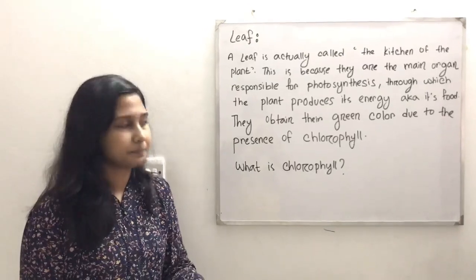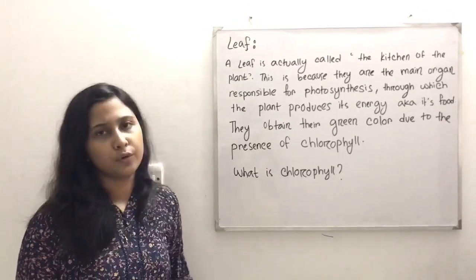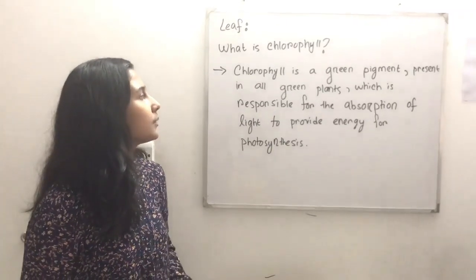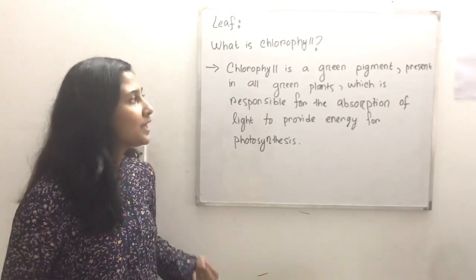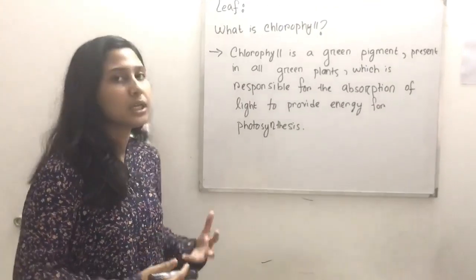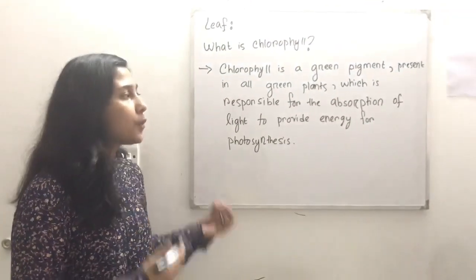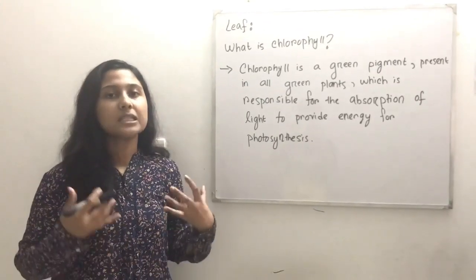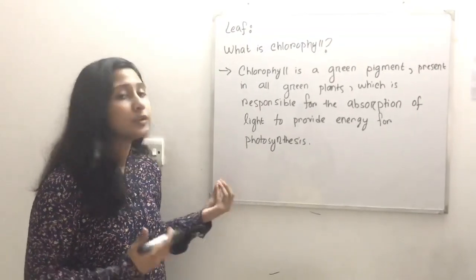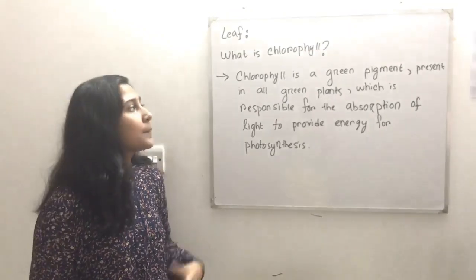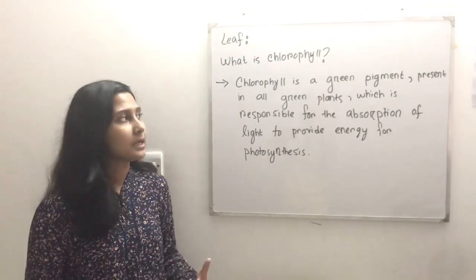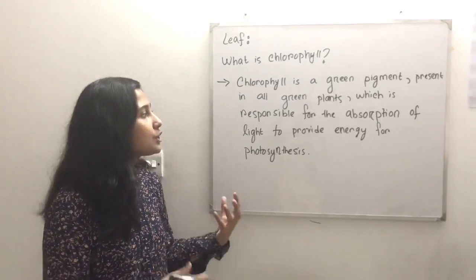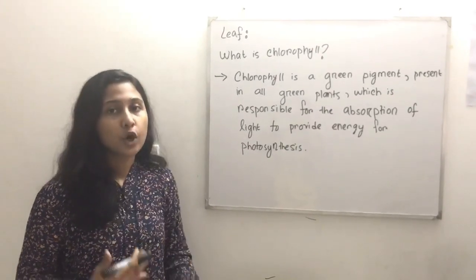Plants obtain their green color due to the presence of chlorophyll. Chlorophyll is a green pigment present in all green plants, which is responsible for the absorption of light to provide energy for photosynthesis.